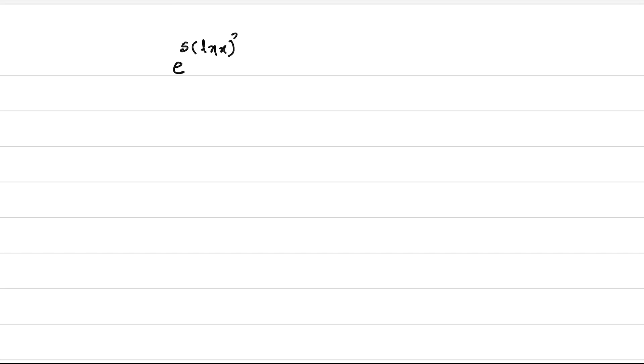It is in the form of e to the power of something — specifically e to the power of (5·ln(x))² + 3. This is e to the power of something, and it is equal to x to the power of something, that is x to the power of 8.